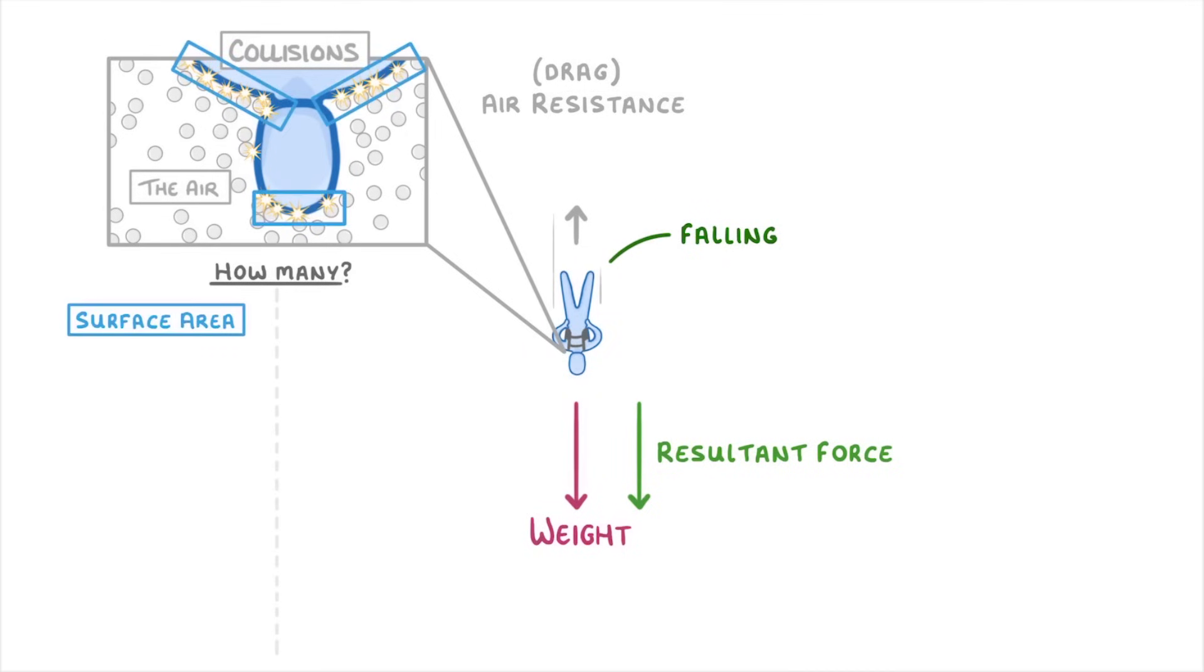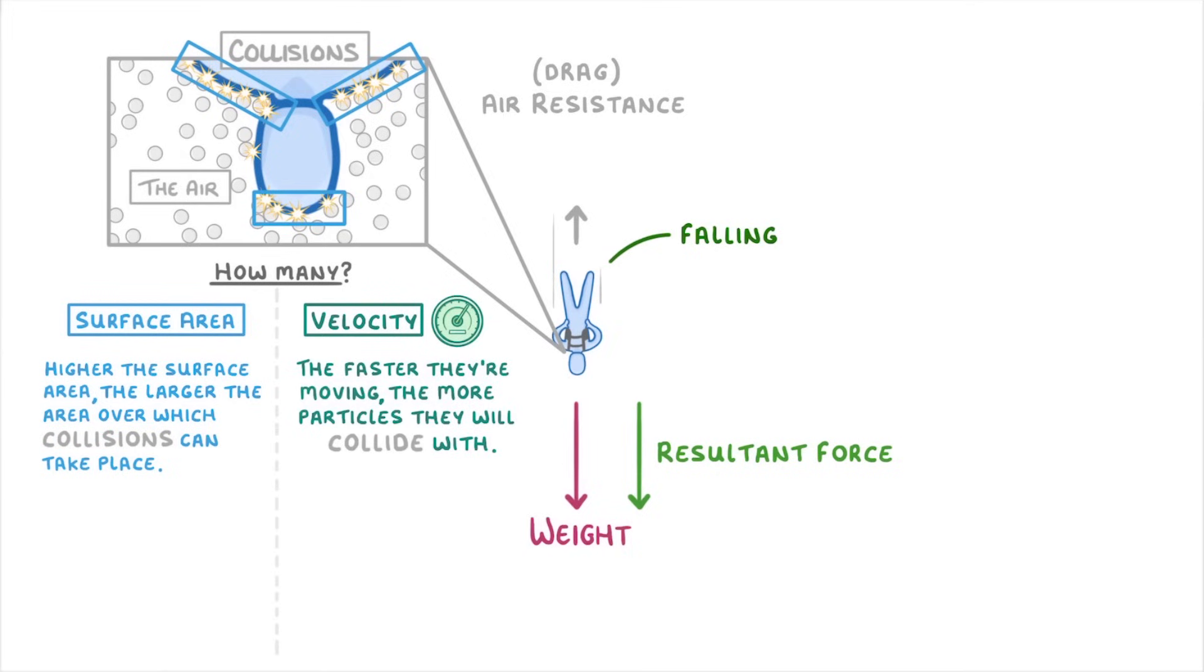The surface area of the person, because the higher the surface area, the larger the area over which the collisions can take place. And the velocity with which the person's moving. Because the faster they're moving, the more particles they'll collide with.